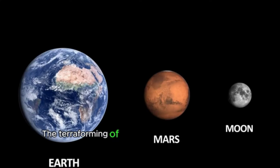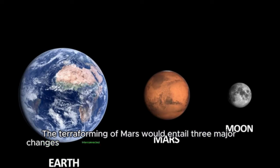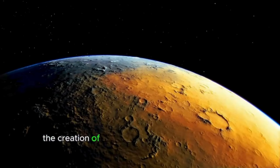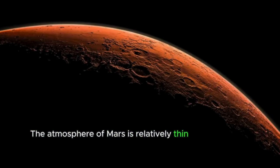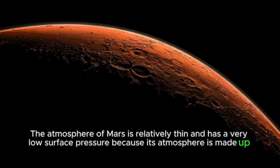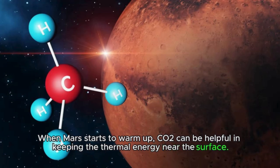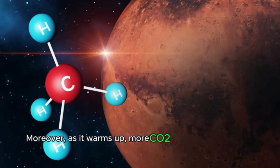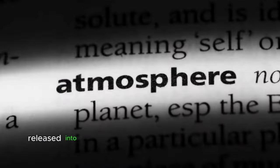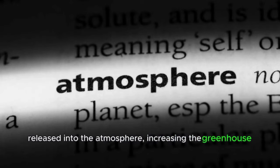The terraforming of Mars would entail three major changes interconnected with each other: the creation of a magnetosphere, the creation of an atmosphere, and an increase in temperature. The atmosphere of Mars is relatively thin and has a very low surface pressure because its atmosphere is made up mostly of carbon dioxide. When Mars starts to warm up, CO2 can be helpful in keeping the thermal energy near the surface. Moreover, as it warms up, more CO2 from frozen reserves at the planetary poles should be released into the atmosphere, increasing the greenhouse effect.